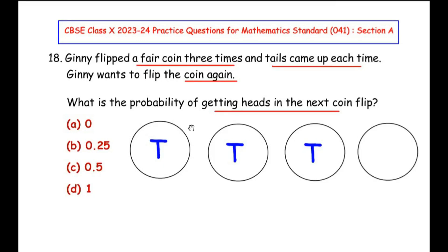So the first time she flips, she gets a tail. The second time she uses the same coin and she flips, again she gets a tail. Third time also she gets a tail.